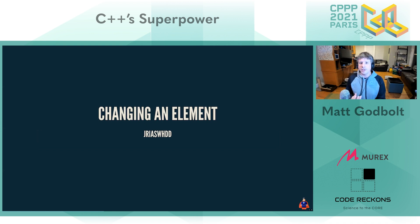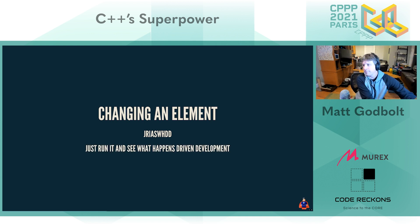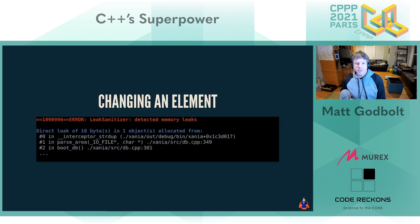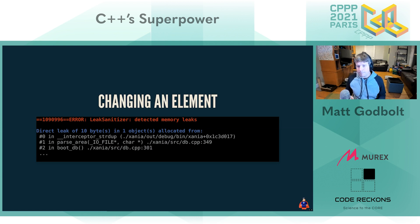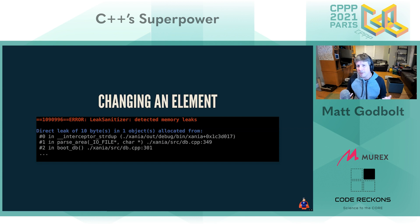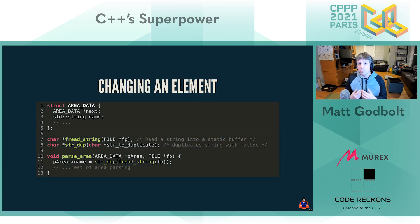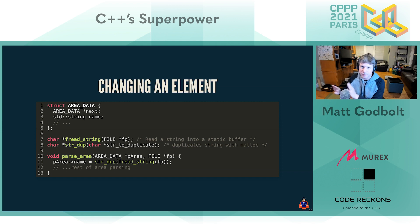Now because everything's compiling, we move on to the second kind of development: DRASWOOD — 'just run it and see what happens' driven development. Our tools are saving us again. The compiler saved us first, and now the runtime is saving us — it's detected a memory leak. I ran the program, went north, killed some monsters, quit, and the leak sanitizer said 'hey, you're leaking memory.' But I just made it better with a `std::string` — we're owning that memory now. So why is it leaking?